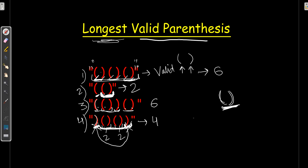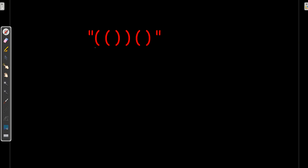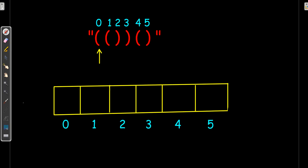Now let's understand the strategy for finding the answer. We take the expression — open brace, then a pair, then a closed brace, then open and closed — and assign indices. We'll also use a memo array which I'll call DP. We'll be solving this problem with dynamic programming, which stores values to avoid recomputation and gives us efficient time complexity.